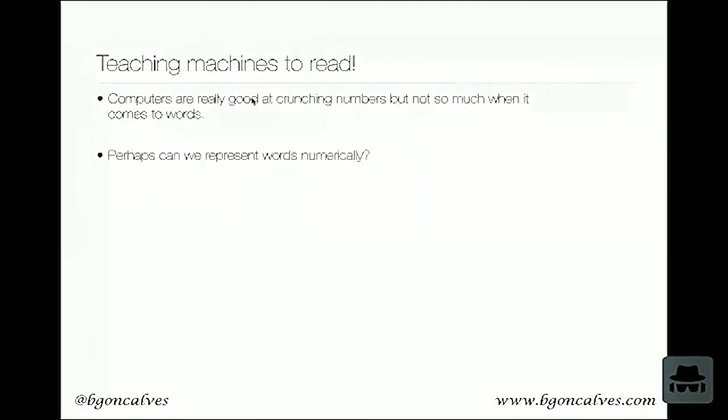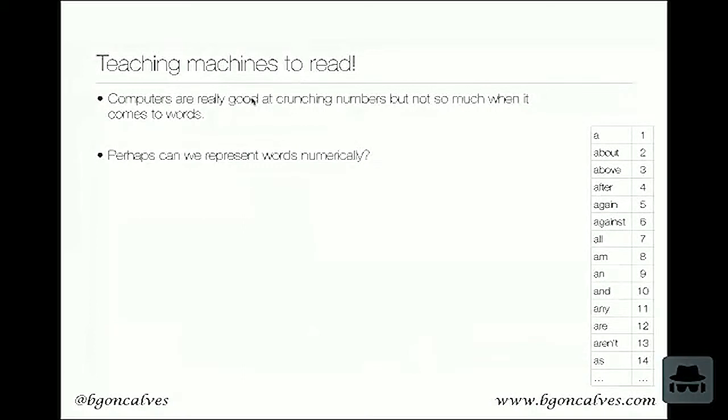One approach you can take is perhaps you can represent words numerically, when we create a numerical representation that the computer is going to understand. One of the classical approaches of doing this is you just assign an ID to each word. So what this means is each word gets assigned a number. The problem with this is, or at least one of the problems with this, is that since computers interpret numbers literally, they necessarily, and of course naturally, assume that the number two is close to the number one and the number three, and far from the number 14. But as you can see in this table, that doesn't necessarily mean that the word corresponding to number one, which in this case is 'a', is necessarily closer or farther away from the word number 14, the word 'pass'.